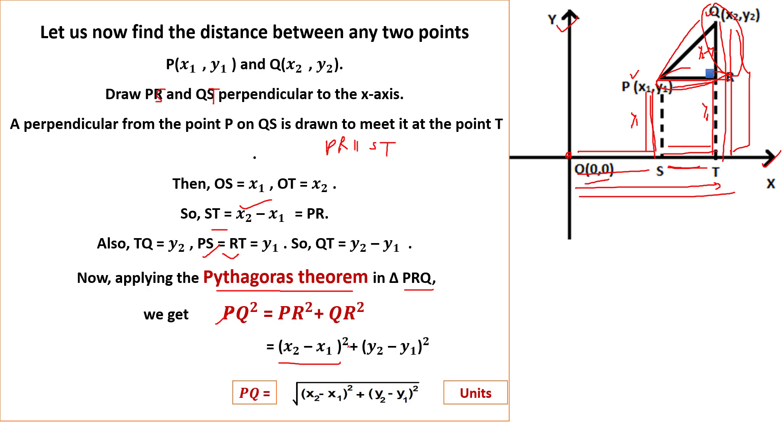It is plus (y2 minus y1) whole square, which is your length QR. When you find out PQ only, then you put the square root: root of (x2 minus x1) whole square plus (y2 minus y1) whole square. So write the units also there because this is the length or this is the distance between two points.